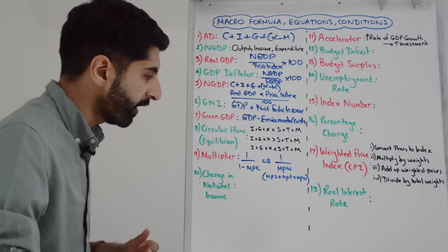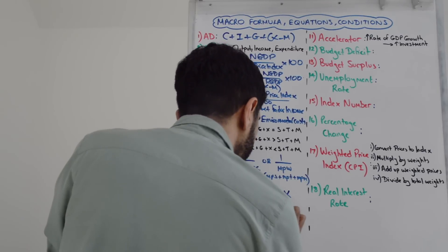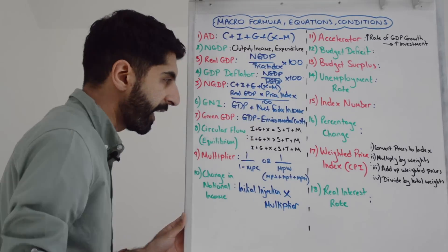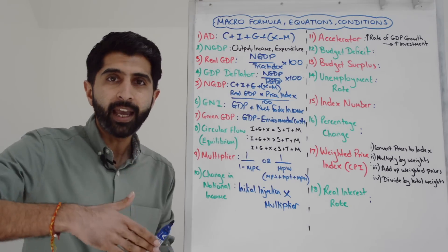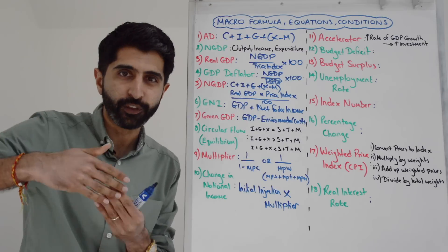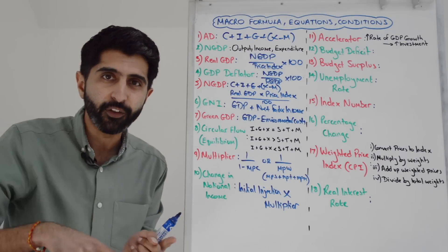To work out the change in national income, you just take the initial injection and multiply by the multiplier to get the overall change in national income. The accelerator effect: we're looking at an increase in the rate of growth of GDP which then links to higher investment, which gives you further increases in the rate of GDP growth.